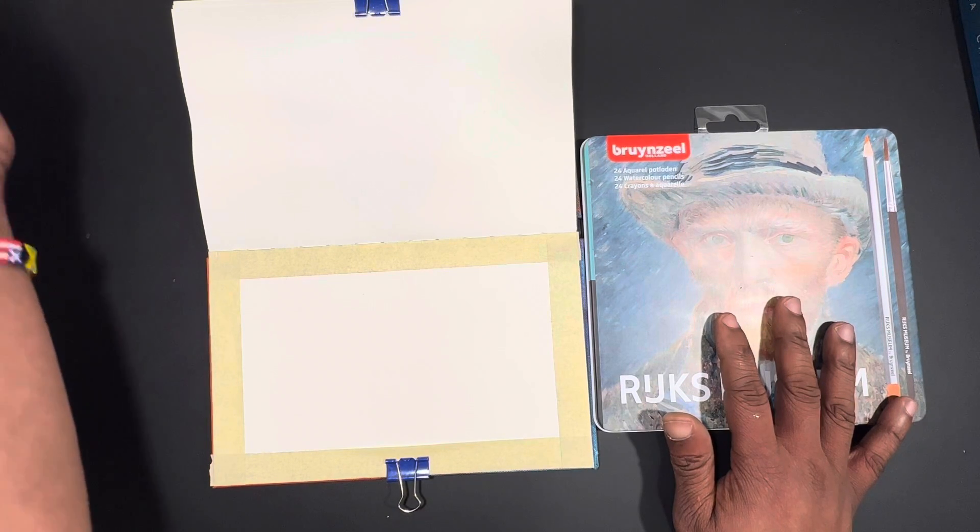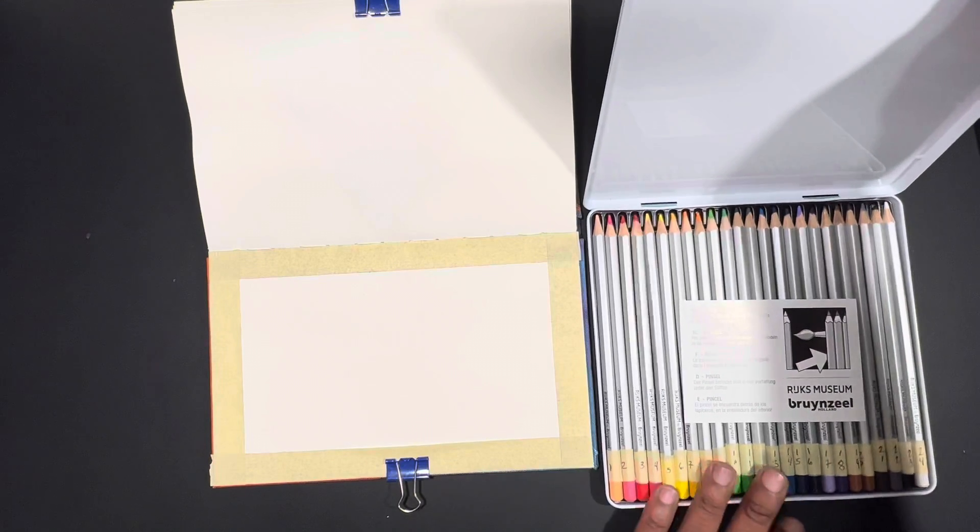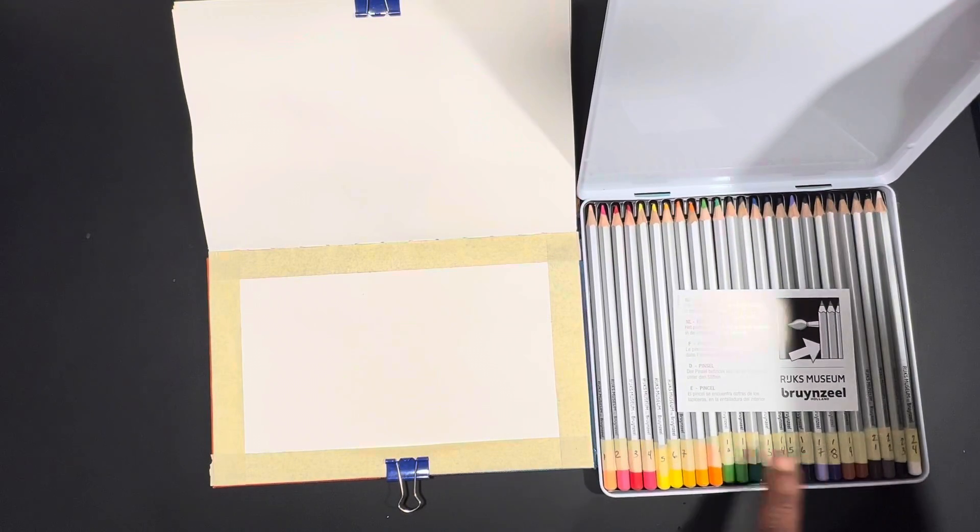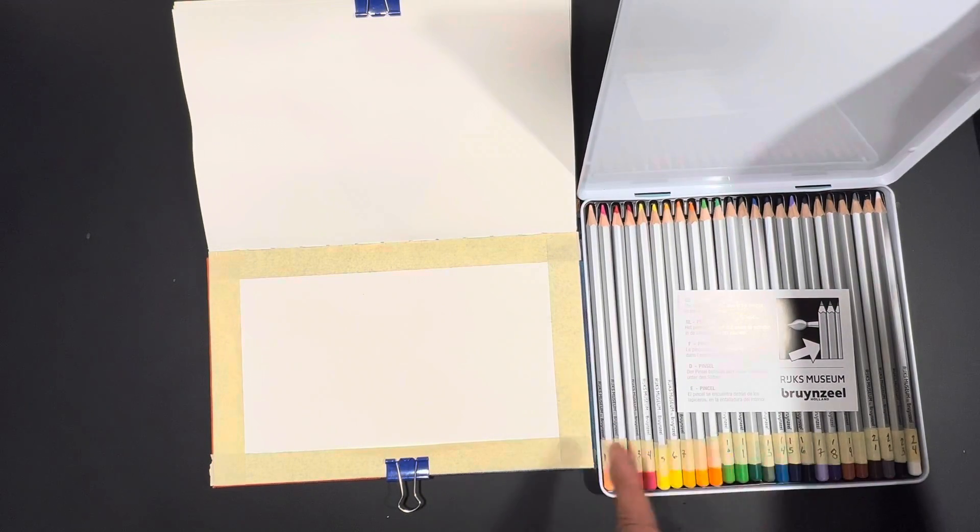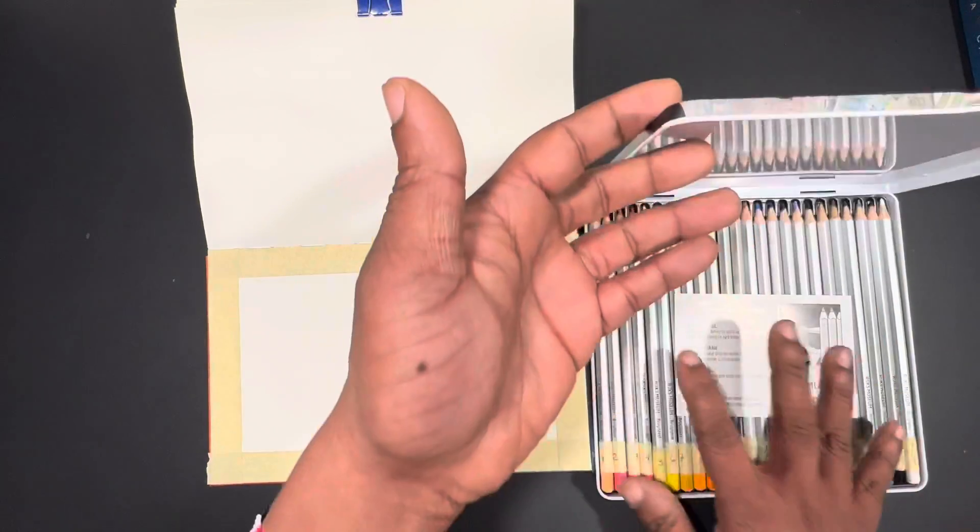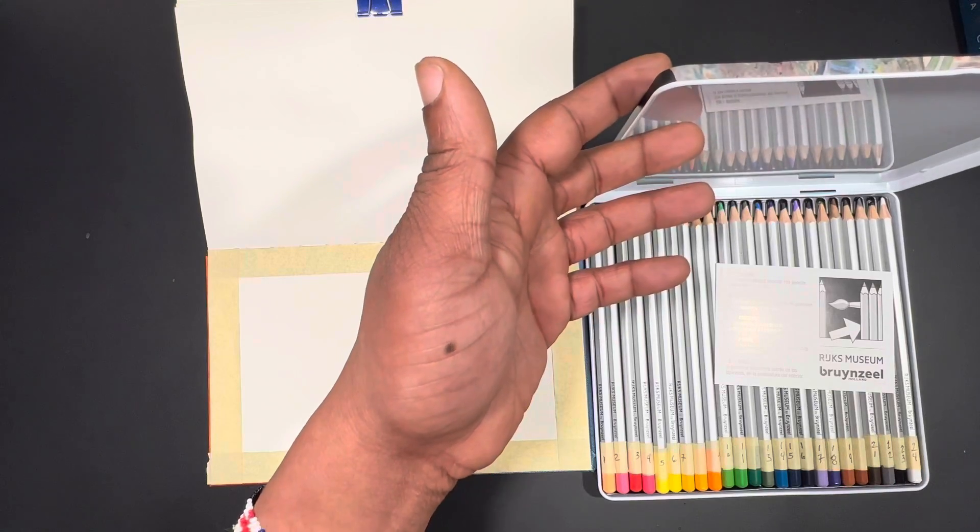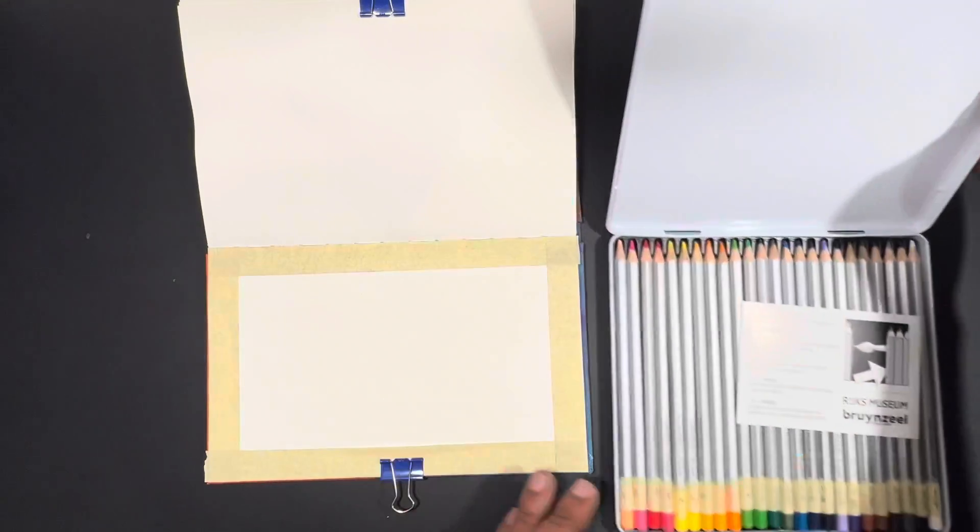So I'm just going to sit that up at the corner of my desk so I can refer to it. The pencils do not come with any names or numbers on them, so I have a numbering system which I developed for them. It's just one through 24 for the total number of pencils that's in here, after I put them in rainbow order.